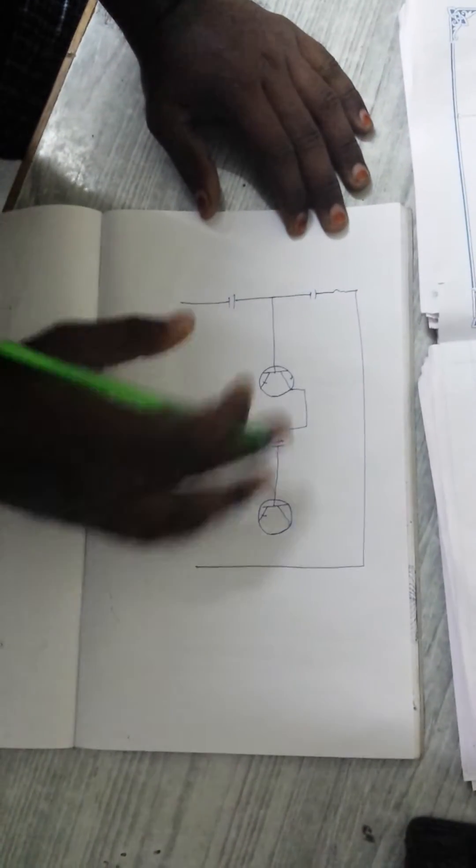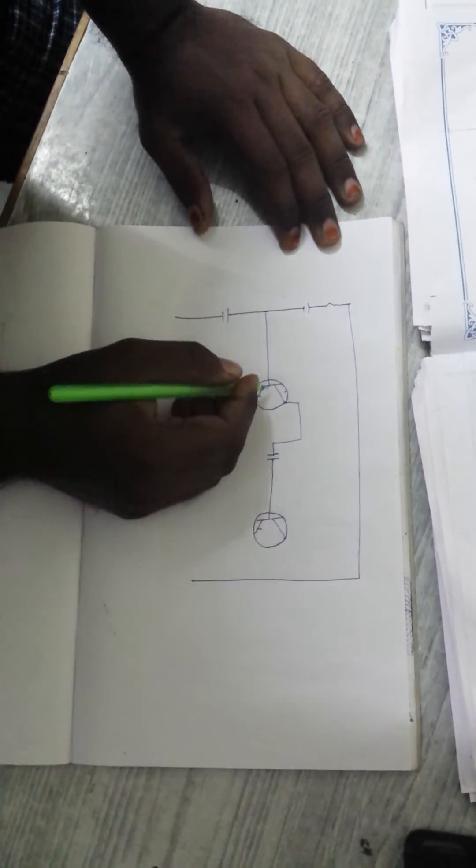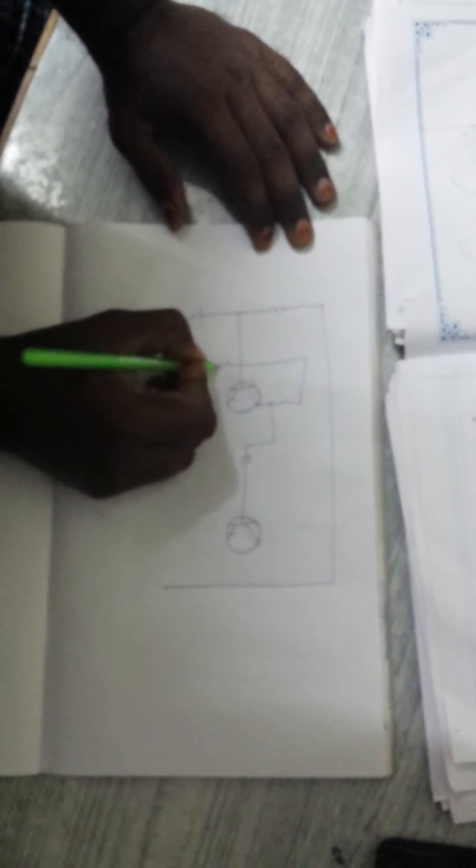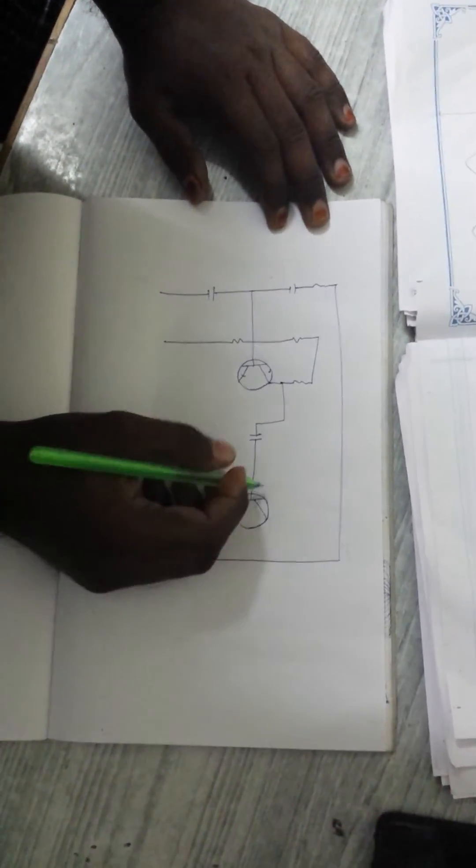Then here leave it. Then here go to a resistor. Take a resistor and go here. Take a resistor and go here. Take a resistor and go here. Leave it over.